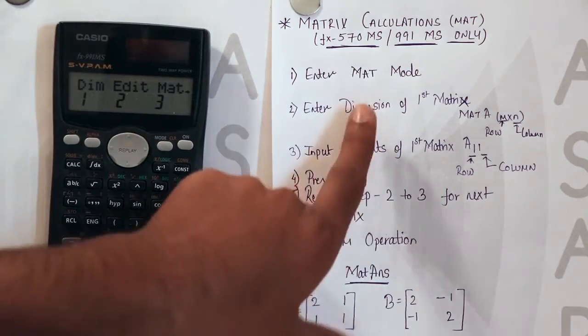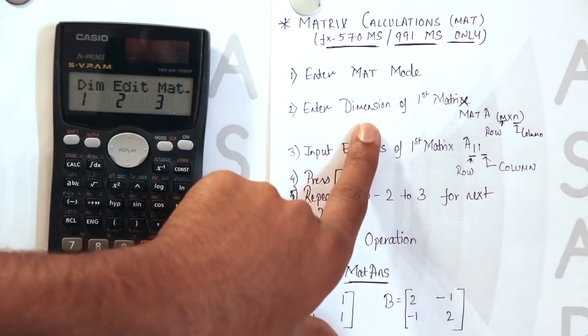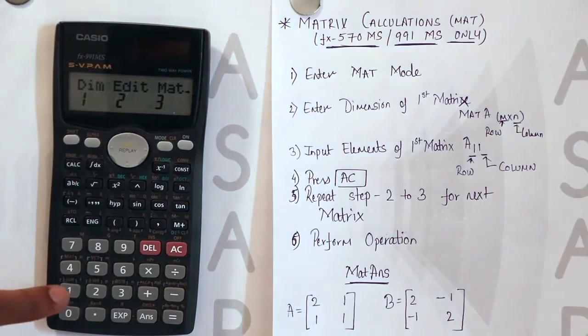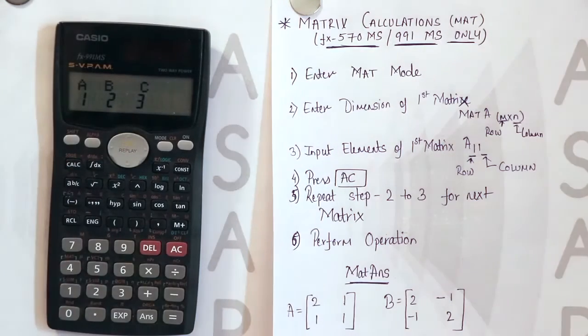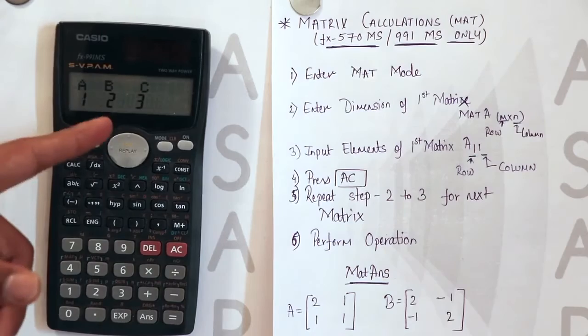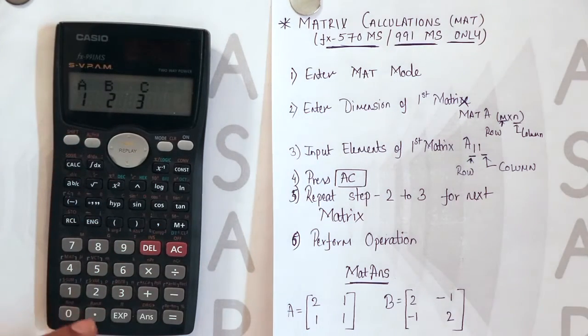Now first step we have entered the matrix mode. Now you have to enter the dimension. So we will select the first option that is dim. Now A, B, C in which matrix you need to enter. We are selecting A. You can select B also, C also. Not an issue.